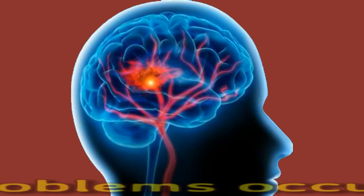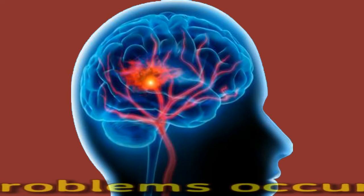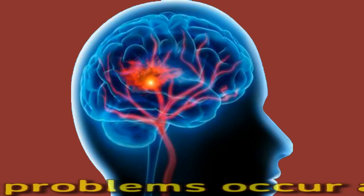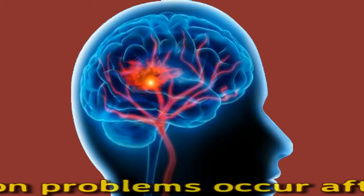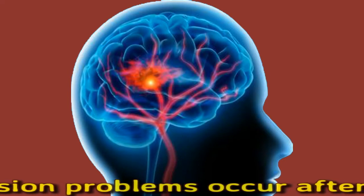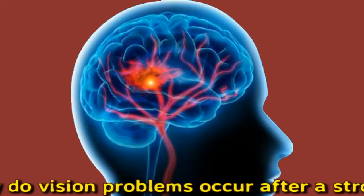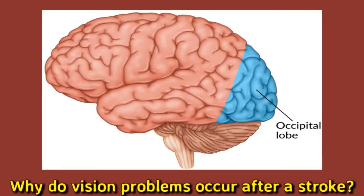Brain cells die quickly without oxygen, and a loss of blood supply to the brain starves the cells of oxygen. If a stroke affects the part of the brain that controls and receives information from the eyes, this can cause vision problems. For instance, a stroke can damage the occipital lobe, which is responsible for processing visual inputs. A stroke can also affect the brainstem, which handles visual balance, interpreting objects, and eye movements.